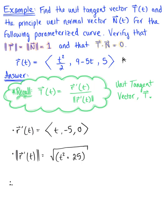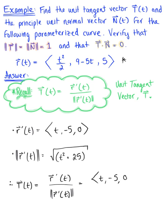Therefore, the unit tangent vector T is the tangent vector divided by the magnitude of the tangent vector. So we are left with the vector with components (t, -5, 0) divided by the square root of t squared plus 25.